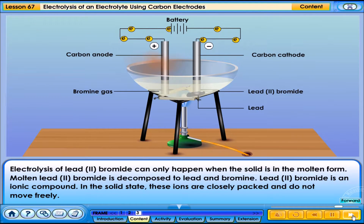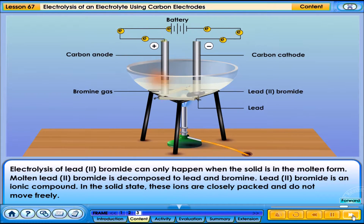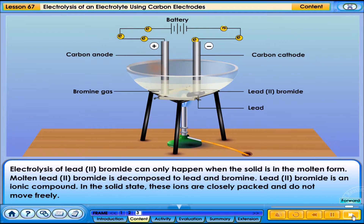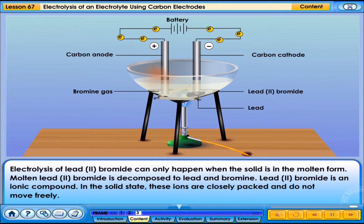Electrolysis of lead-2-bromide can only happen when the solid is in the molten form. Molten lead-2-bromide is decomposed to lead and bromine. Lead-2-bromide is an ionic compound. In the solid state, these ions are closely packed and do not move freely.